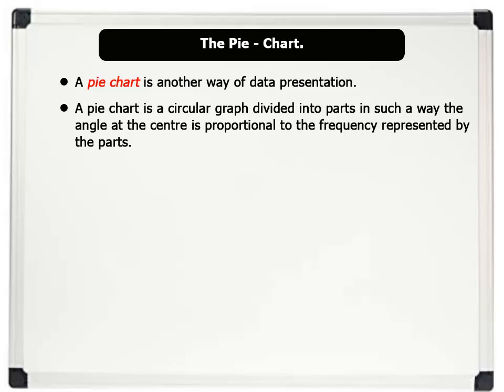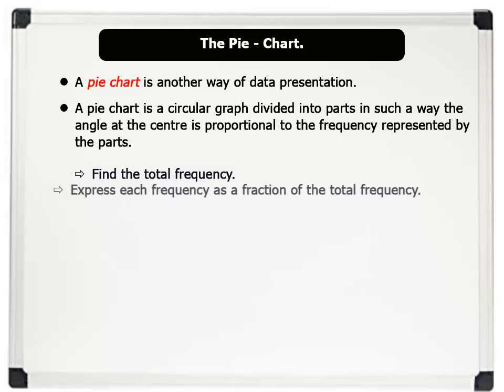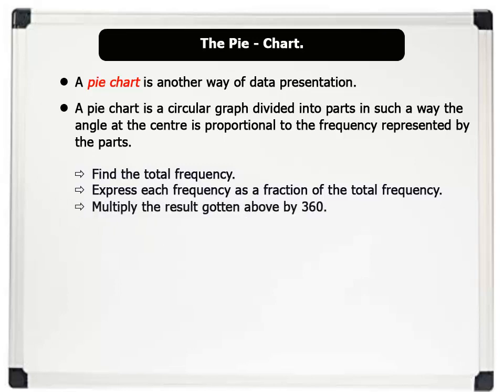Before drawing your pie chart, we first do the following: 1. Find the total frequency. 2. Express each frequency as a fraction of the total frequency. 3. Multiply the result gotten above by 360.